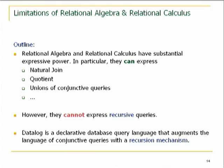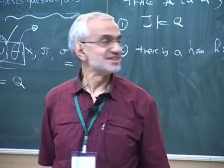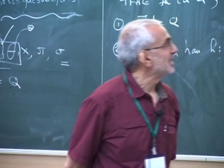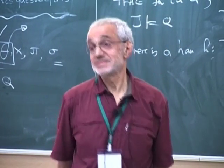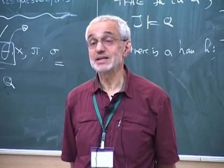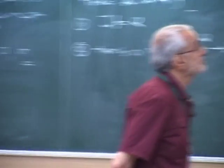The most striking thing that we have seen now, with three different proofs, is that transitive closure is not first-order definable — so it's not expressible in algebra or calculus.